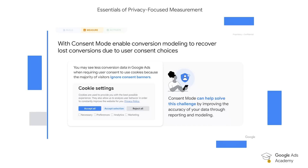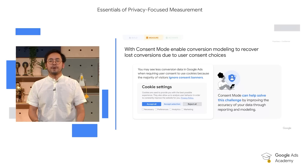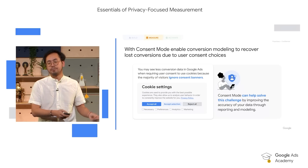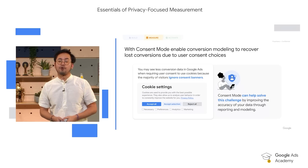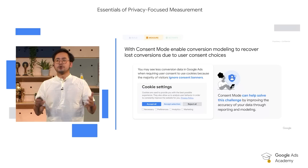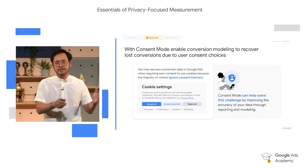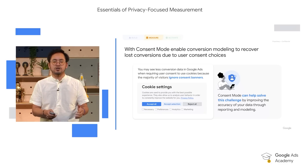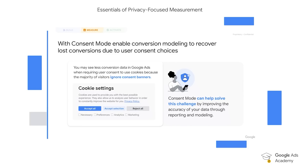Consent Mode is Google Ads' measurement solution that allows your Google Tags to communicate about a user's consent status and also enables Google to model for conversions. Consent Mode is respectful of consent choices while allowing you to better measure. It will also help you solve for unknowns — conversion modeling will be there to fill the gaps where observability of data can't be recovered. Used with Enhanced Conversion for web, it will provide you with a 360-degree view of your performance.